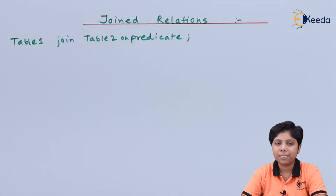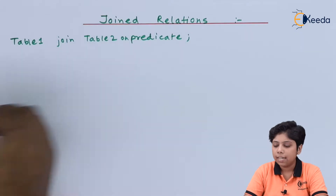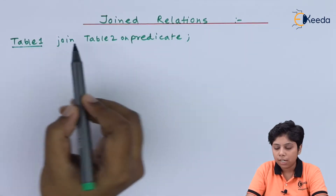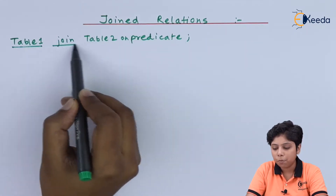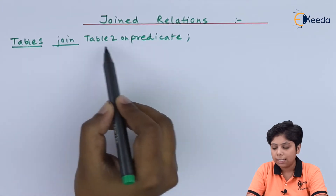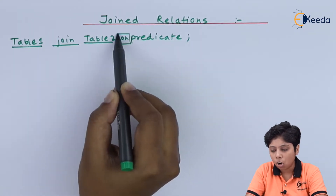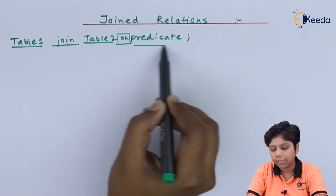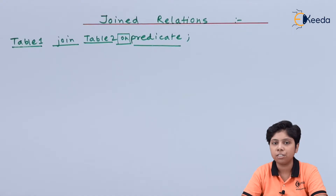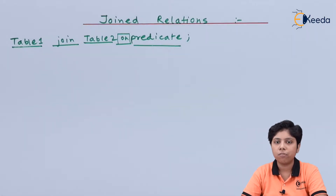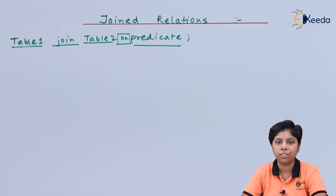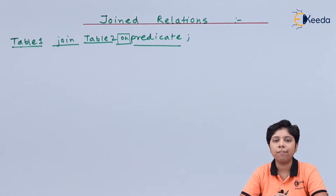The basic syntax is: name relation one, then the type of join, then relation two, then use the keyword ON, and then give the predicate on which the joining is to be done. We will start with the inner join and see how it is done with an example.